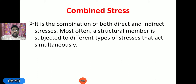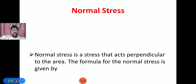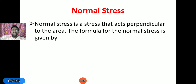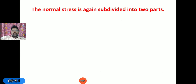Combined stress is a combination of both direct and indirect stresses. Most structural members are subjected to different types of stresses that act simultaneously — such as axial, shear, flexural, and torsional stresses. Examples include wheels, steering wheels, and propeller shafts where different combinations of loads are applied. Coming to normal stress: normal stress acts perpendicular to the area of a body. The formula is σ = R/A, where σ is normal stress, R is the resisting force, and A is the area of the body.